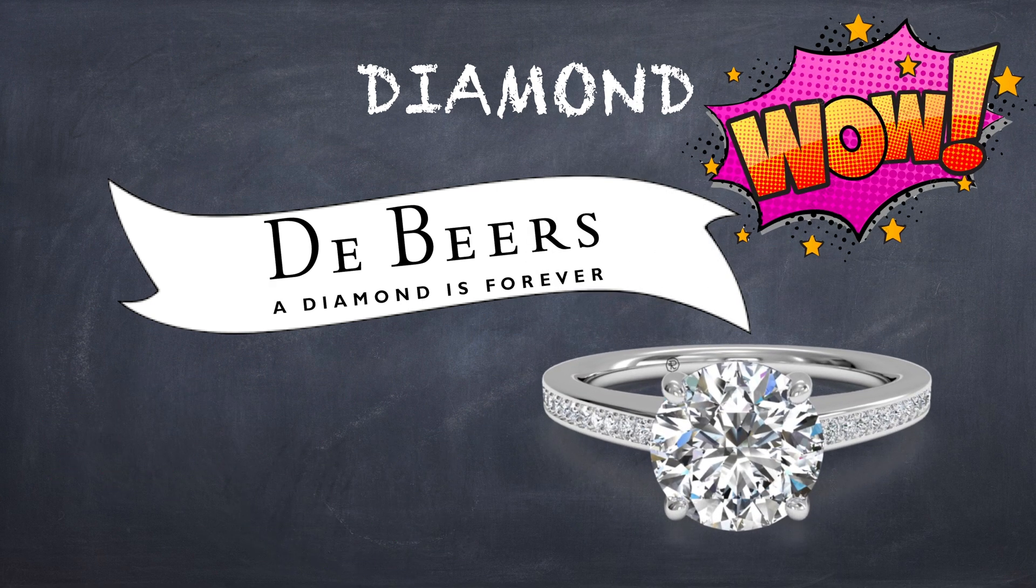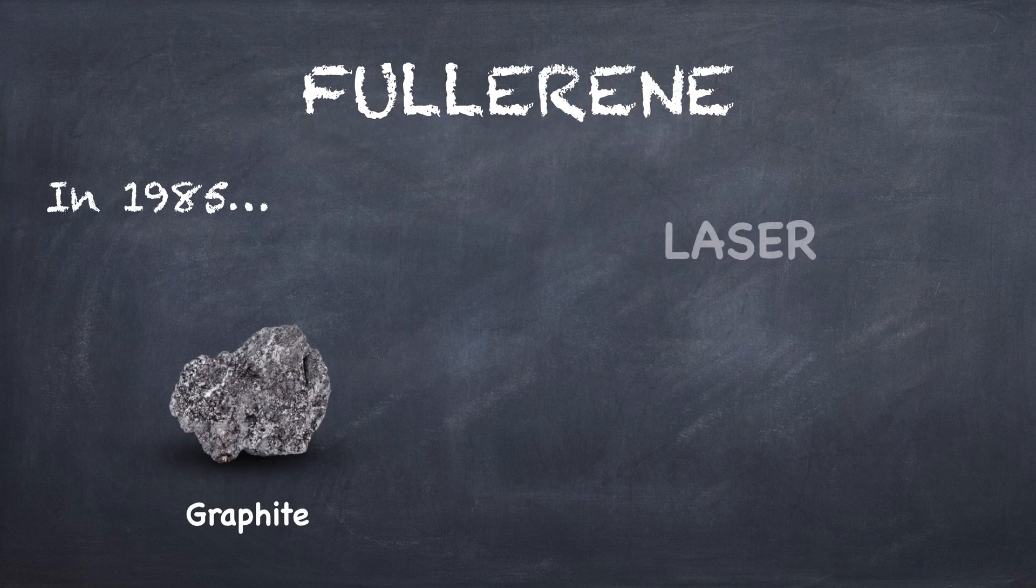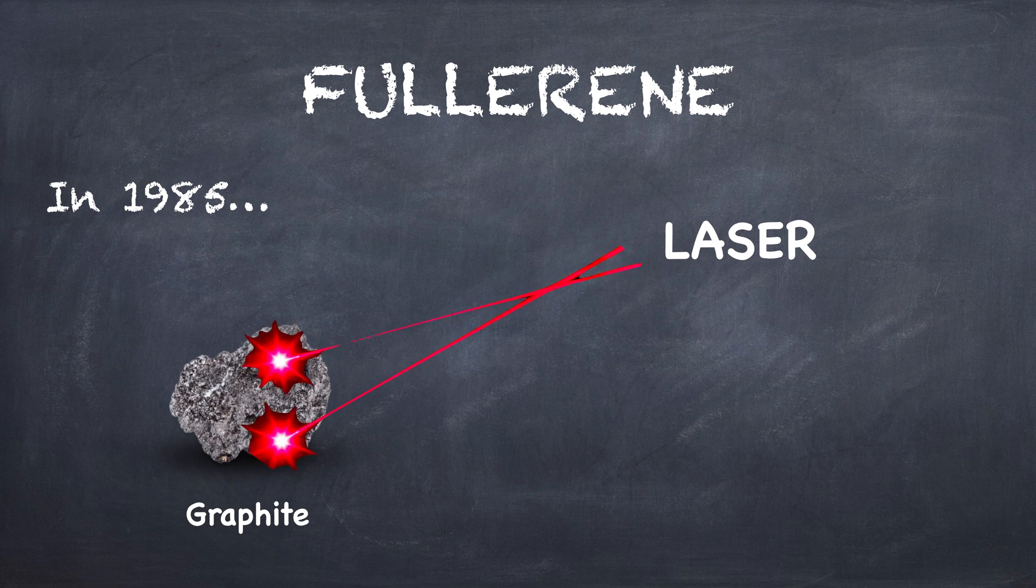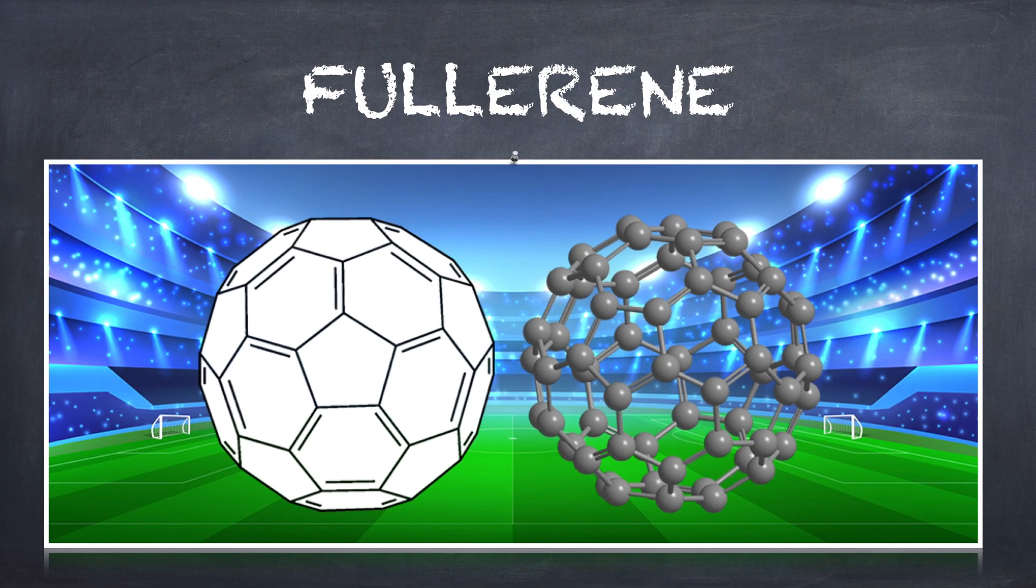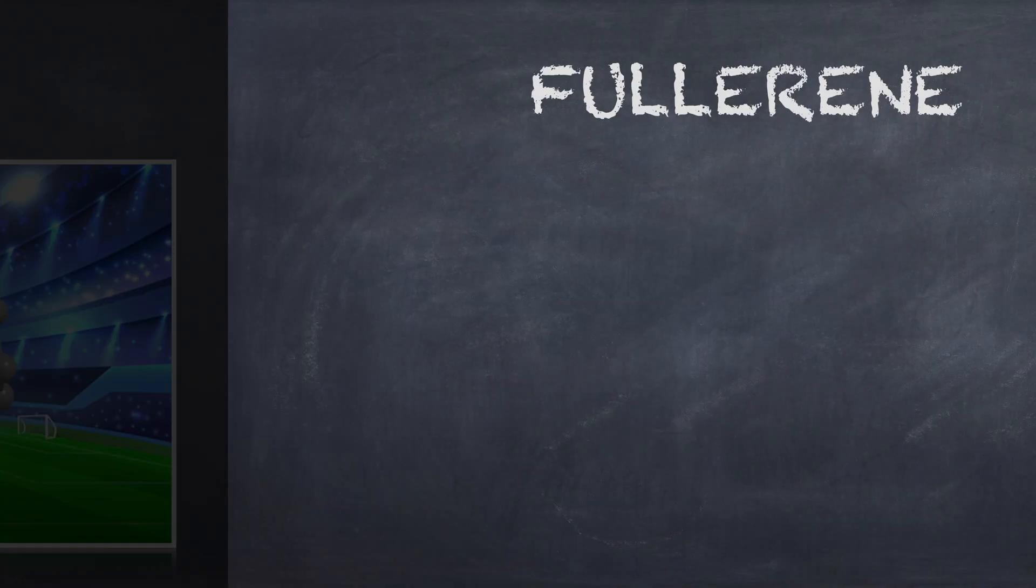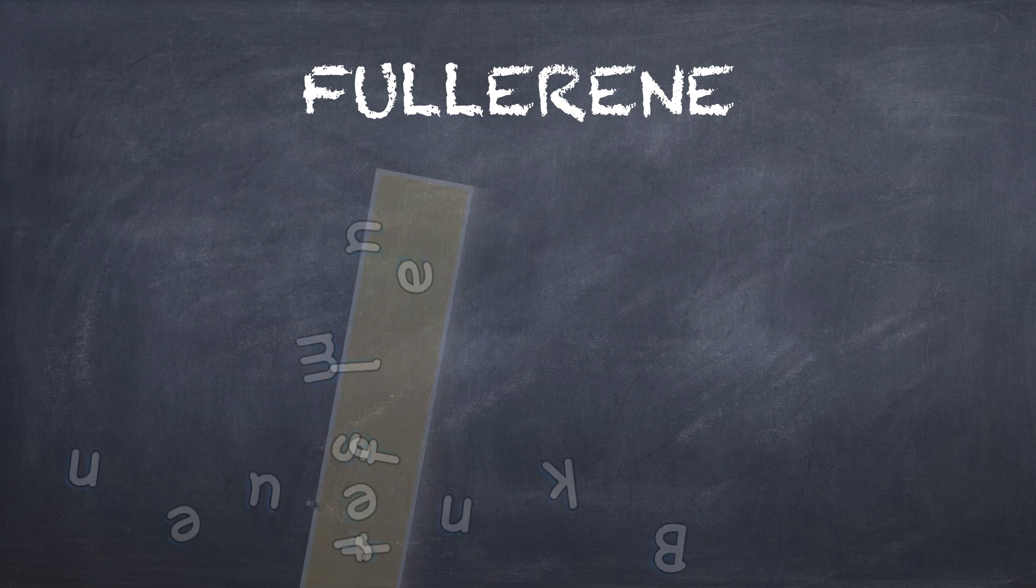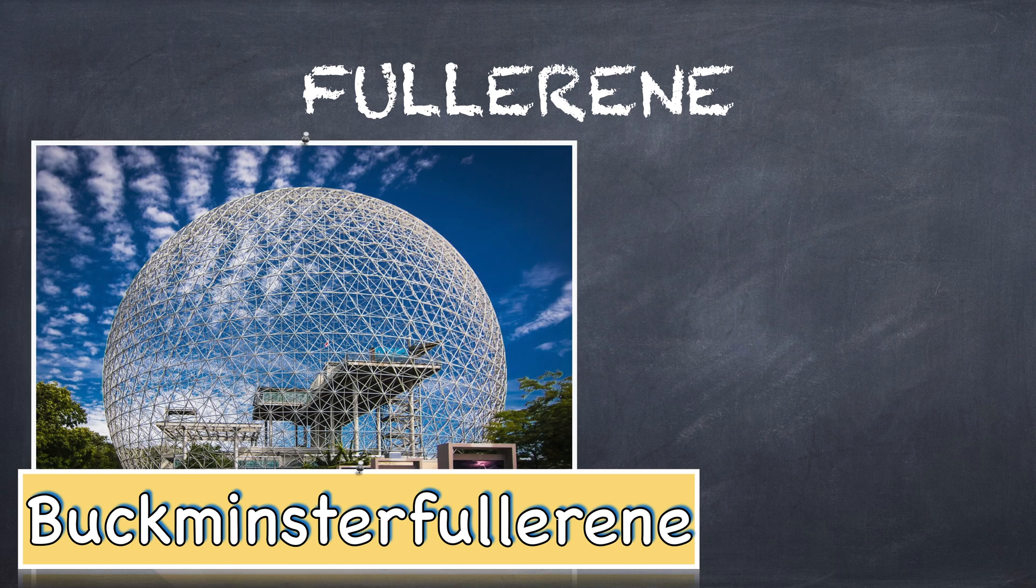In 1985, a new form of carbon was discovered by vaporizing graphite with lasers. Scientists created a mysterious new molecule made of pure carbon. This molecule turned out to be a soccer ball-shaped sphere made of 60 carbon atoms. Scientists named this molecule buckminsterfullerene after an architect who designed a geodesic dome. Now it is commonly known as the buckyball.